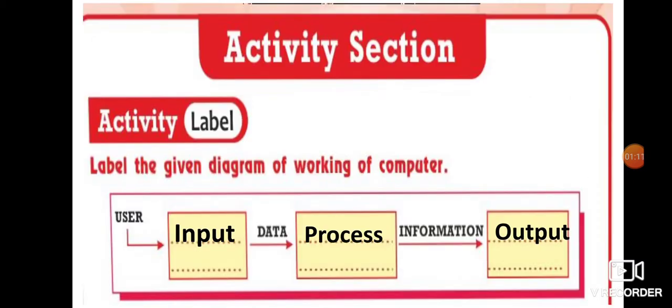Next we are going to do activity section, that is label the given diagram of working of a computer. So you have to write what is input, what is process, and what is output. User is the input, data is the process, information is the output.